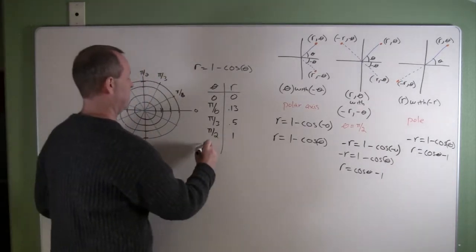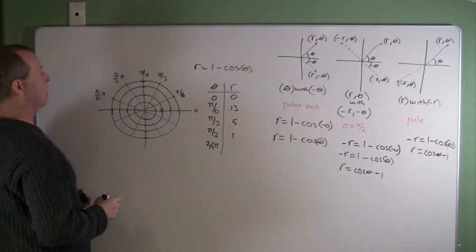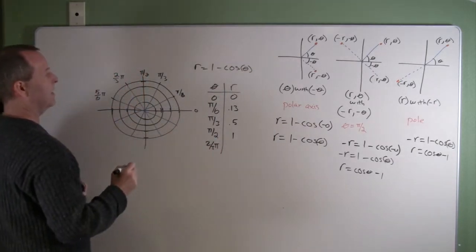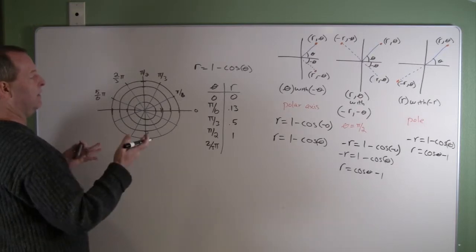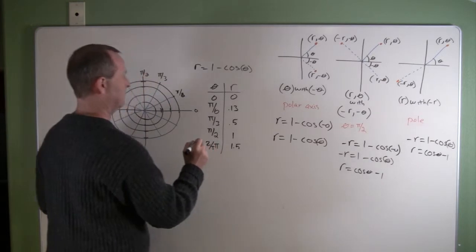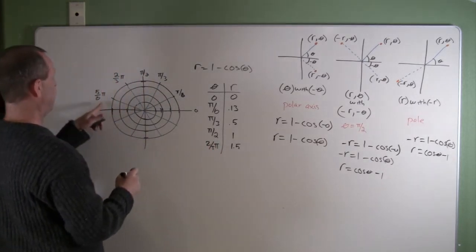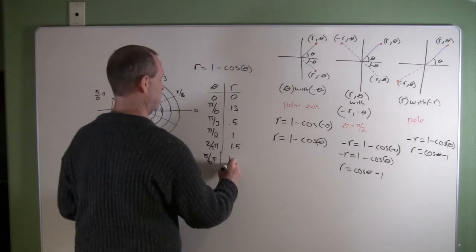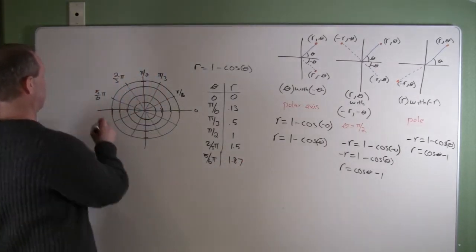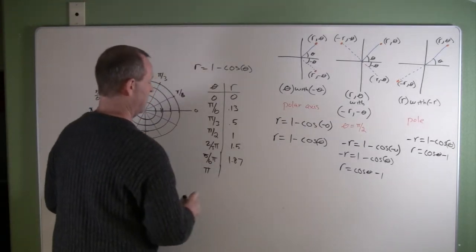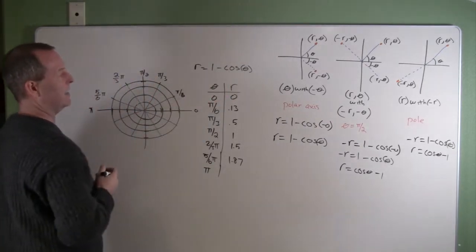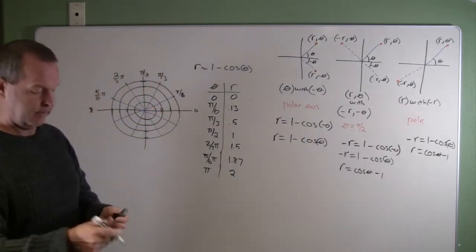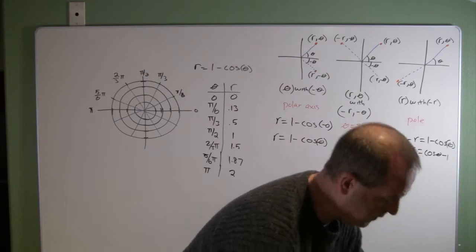2 thirds pi. Cosine becomes negative 1 half, which produces 1 minus a negative 0.5 which adds to be a positive 1.5. And then 5 sixths pi is 1.87. And then let's look at pi all the way out there. Cosine of pi is negative 1. 1 minus a negative 1 produces a 2. So there I have sufficient amount of points to start to get an idea of what this graph will look like.